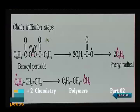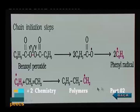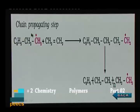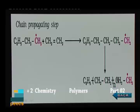In the chain initiation step, benzoyl peroxide generates a free radical, which changes to a phenyl free radical. This then adds to the monomer — ethylene — to form another free radical species. The second step is chain propagation. Here the larger radical formed in the initiation step reacts with another reactant molecule to form a bigger radical, carrying the reaction forward. The free radical further reacts with another monomer molecule to form yet another free radical entity, which undergoes polymerization to form a large free radical species.